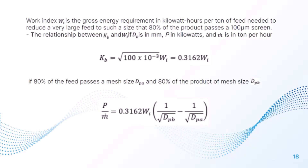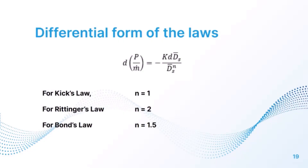If 80% of the product has mesh size W_P, the equation becomes: P/ṁ = 0.3162 × W_I × (1/√D_pB − 1/√D_pA). In differential form, dP/dṁ = K × dD_s / D_s^n. For Kick's Law, n = 1; for Rittinger's Law, n = 2; and for Bond's Law, n = 1.5.